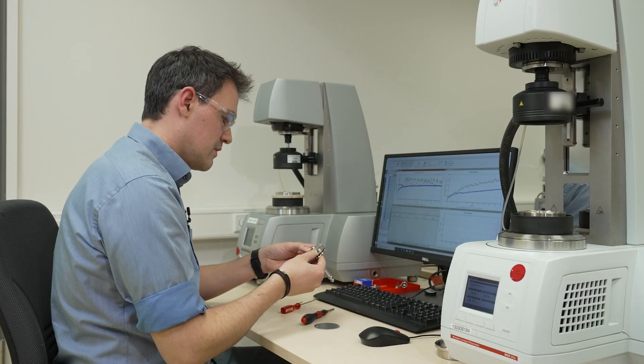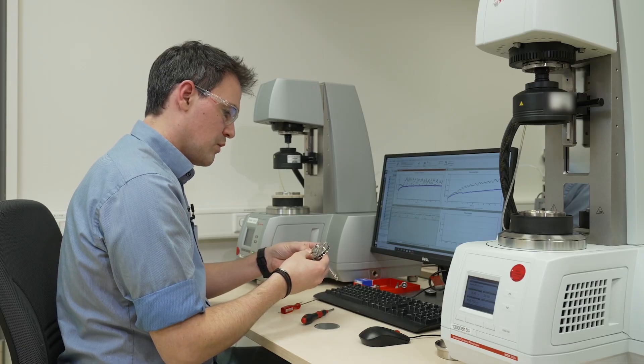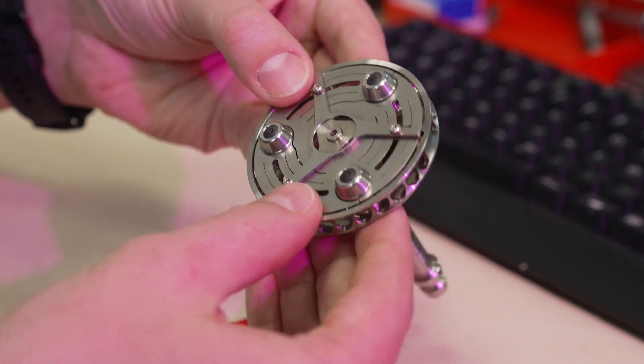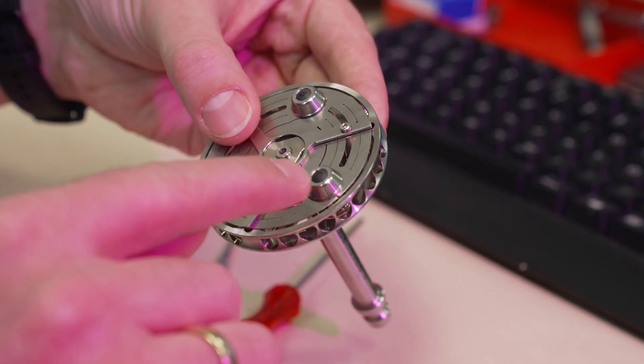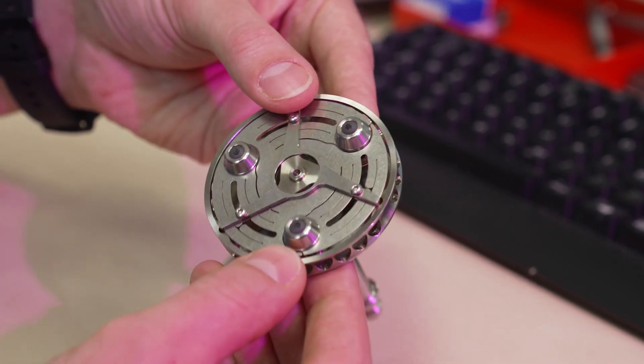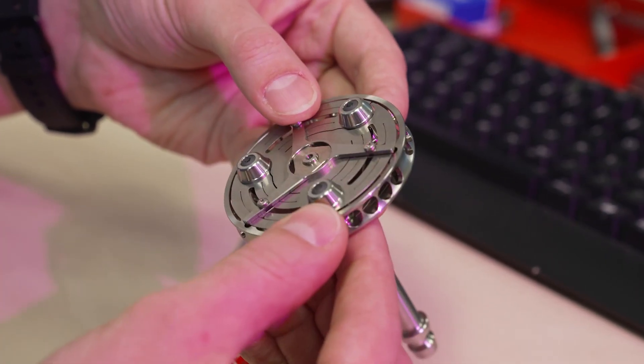Here I can see whether the load is distributed evenly on all three contacts. If this would not be the case you would see for example that one point is much smaller compared to the others.